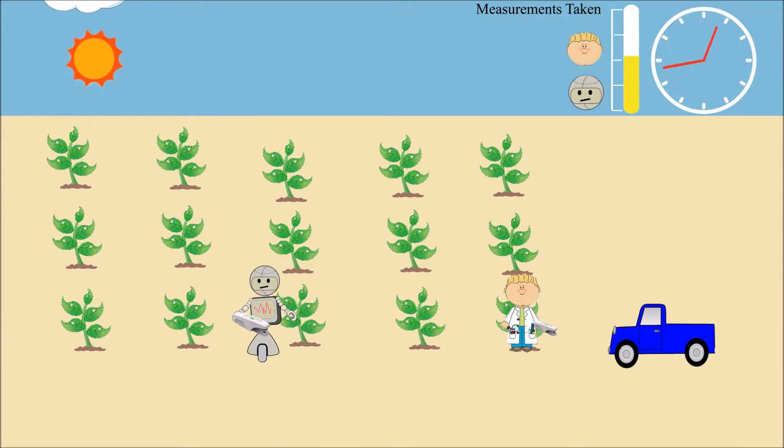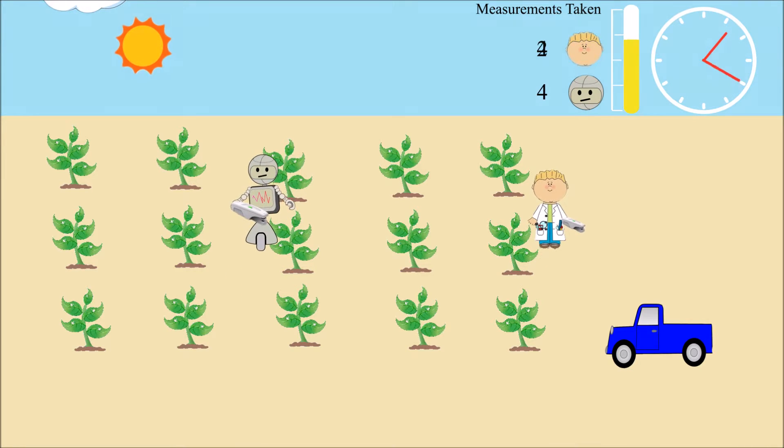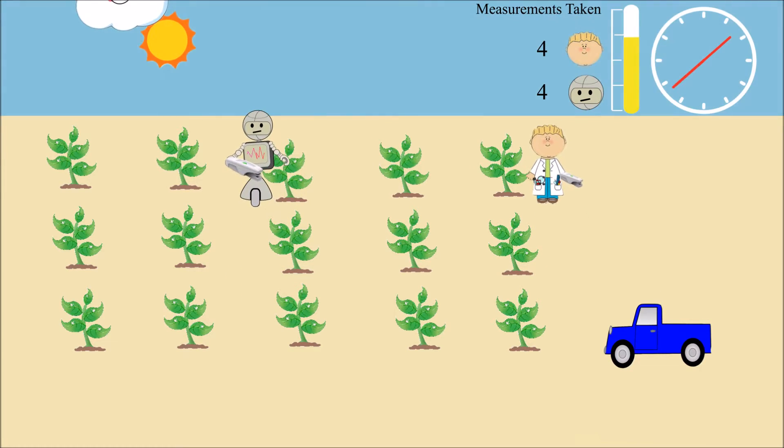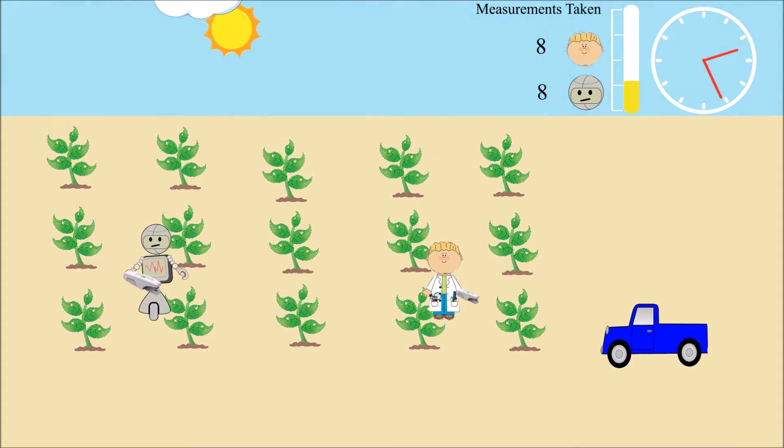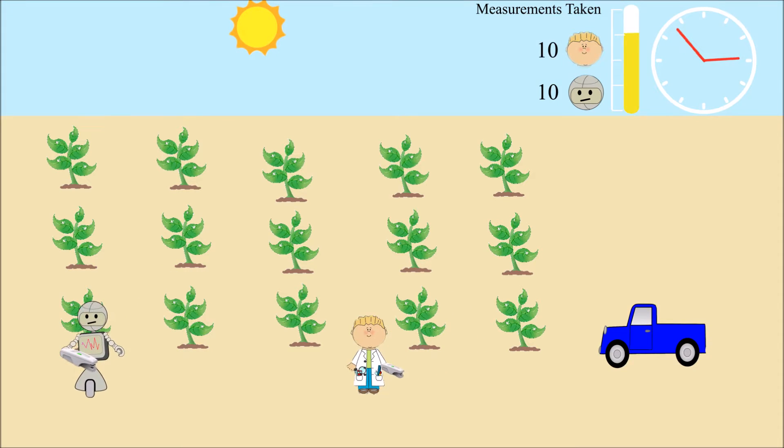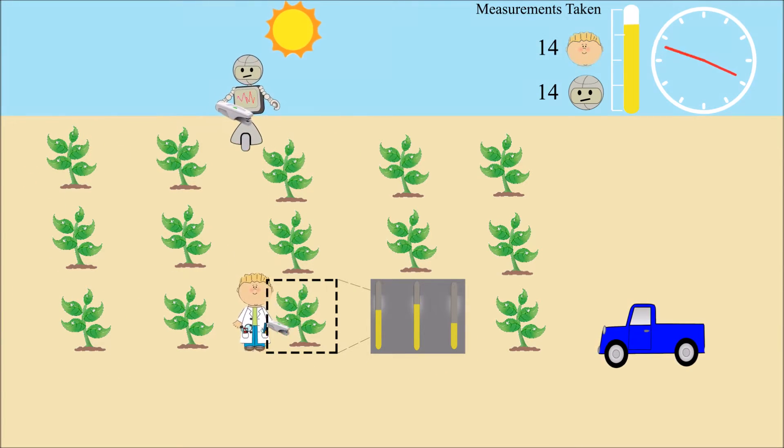One way to address this is to measure each plant at multiple times throughout the day. In our second example, two data collectors come to the field. Instead of starting at the same plant and traveling through the field together, each person starts at a different location in the field. Then they zigzag through the field heading in the same direction.